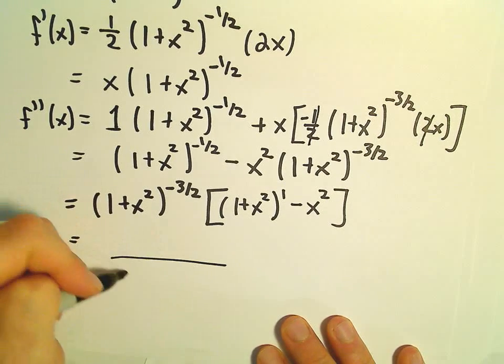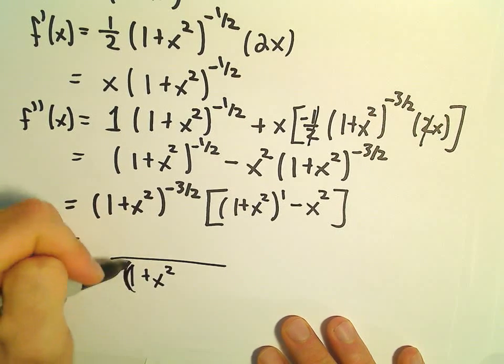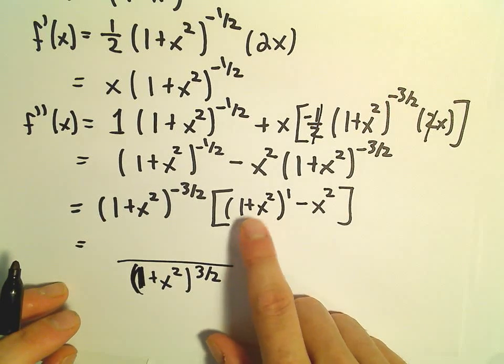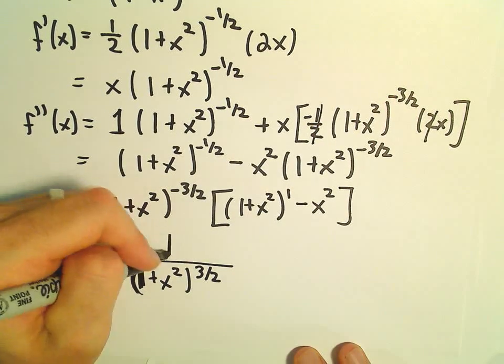So let's see. We can put the 1 plus x squared to the 3 halves in the denominator. Then we would have 1 plus x squared minus x squared, which is just going to leave us 1.